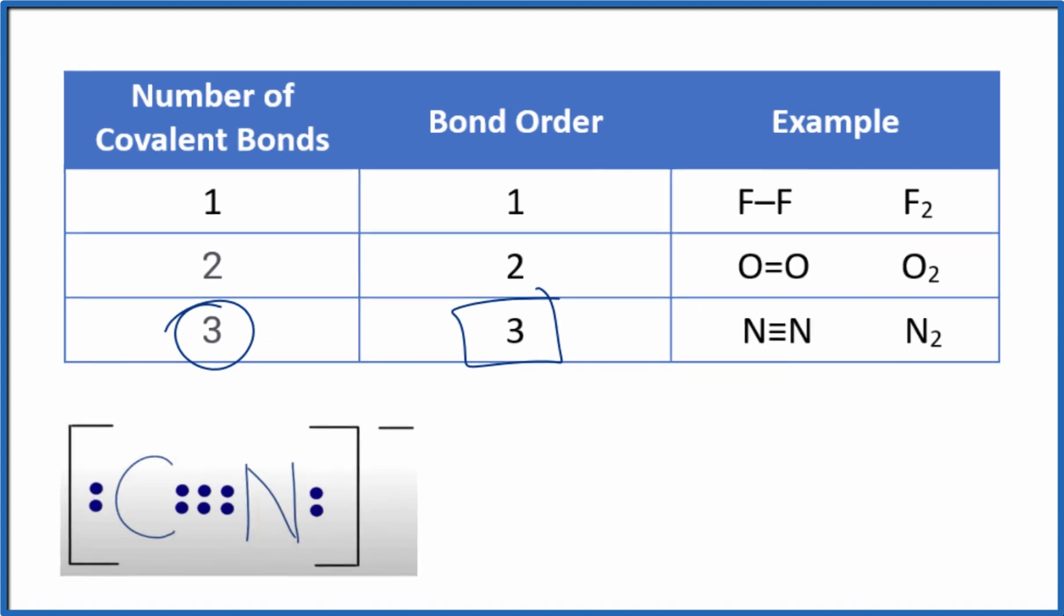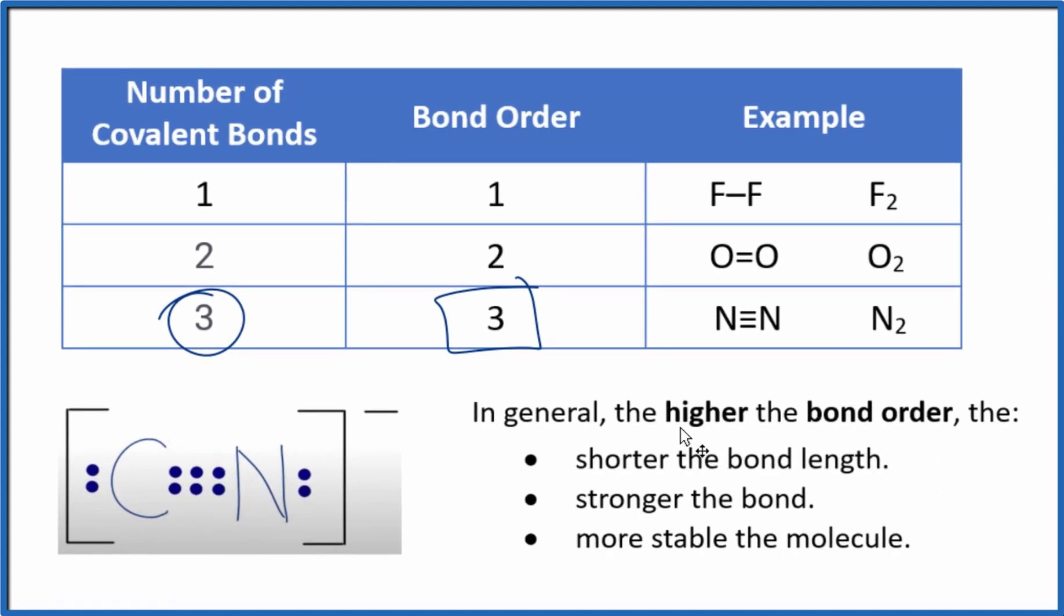When we think about bond order, the higher the bond order is, we'll have a shorter bond. So for example, a bond order of three here will be shorter than a bond order of two, and that will be shorter than a bond order of one.